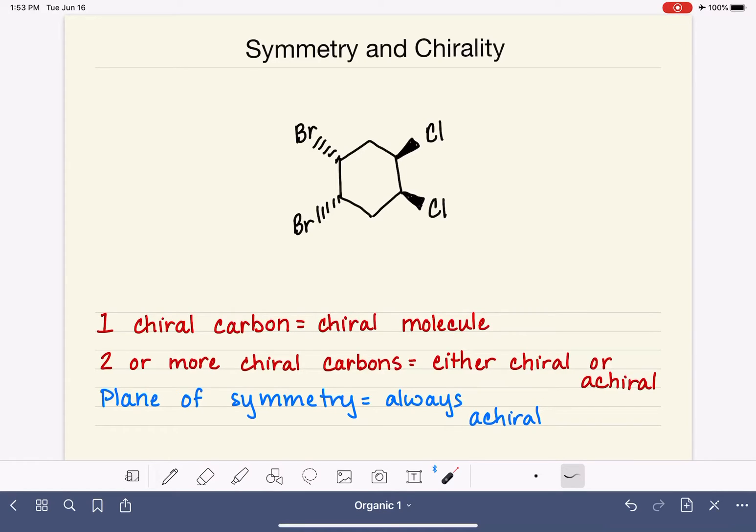A plane of symmetry is a line that you can draw through the molecule that will divide it exactly in half, so that the left half of your line and the right half of your line are perfectly identical to each other.